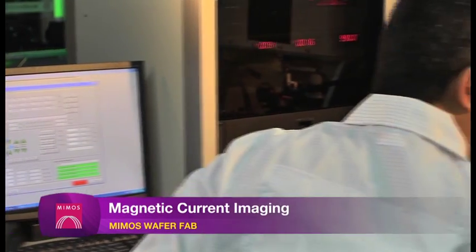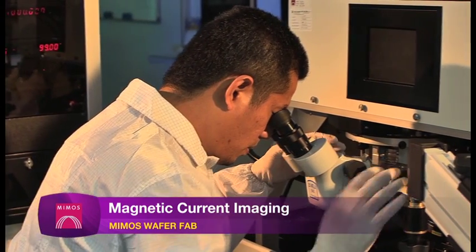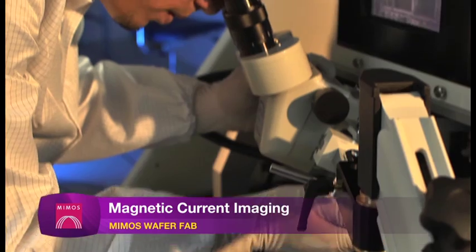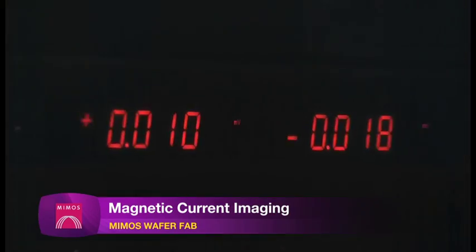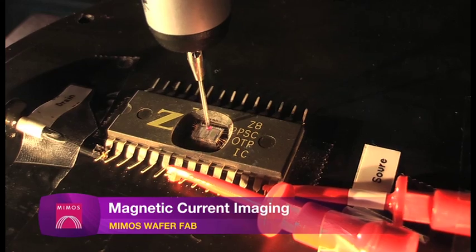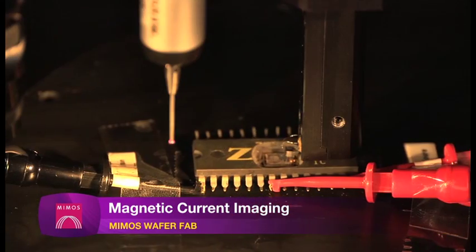The magnetic current imaging system MCI reveals defects such as leakage, short and resistive open. Equipped with two magnetic sensors, SQUID and GMR, the system is capable to detect even weak magnetic fields and determine the failure locations.